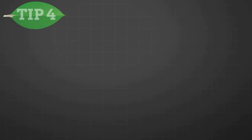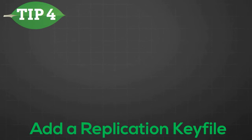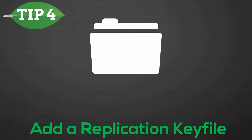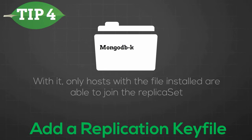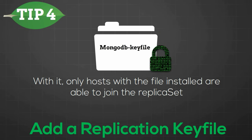Enabling the replication key file will automatically enable authentication and will ensure that only the hosts which have the key file present are able to join the replica set. Enabling the key file also ensures that the replication stream is encrypted, providing an extra layer of protection.